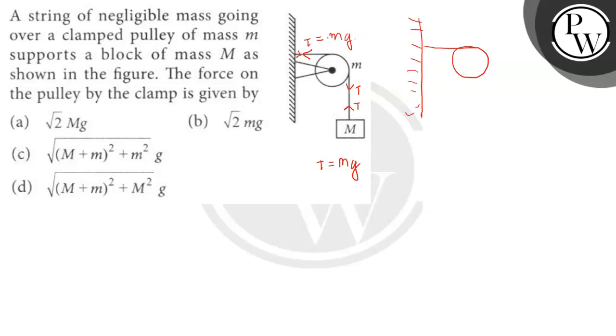Now, in this direction, there is a pulley. The clamp by which pulley is connected. And this is the mass.